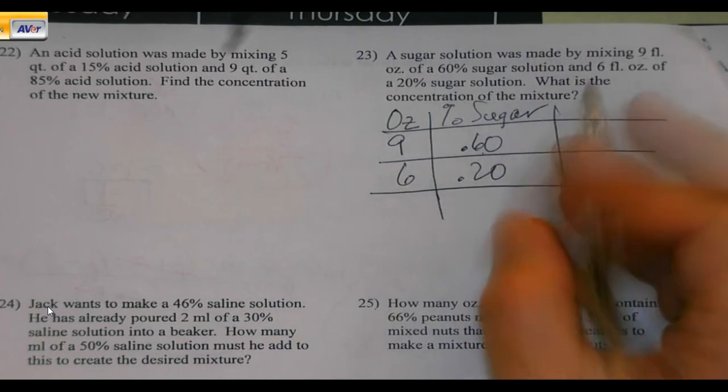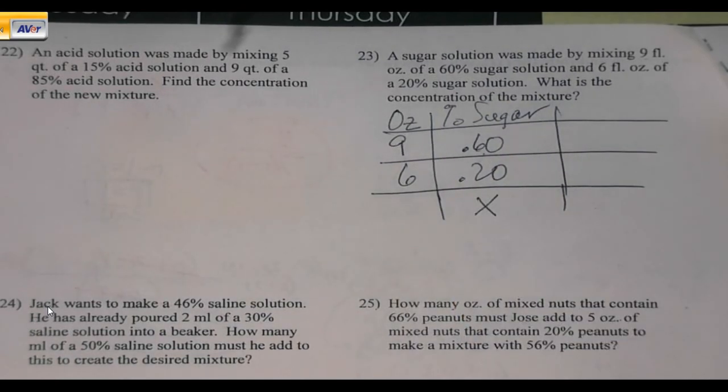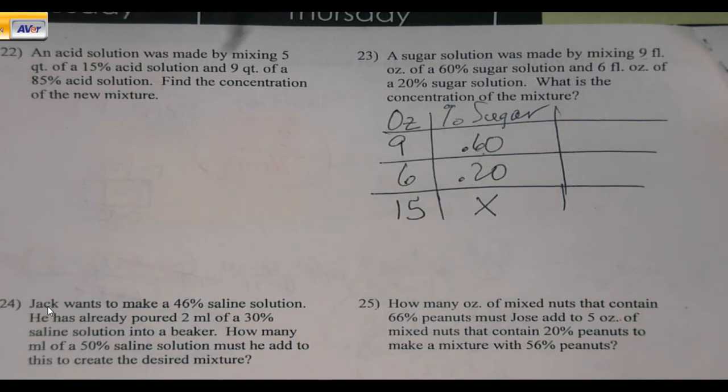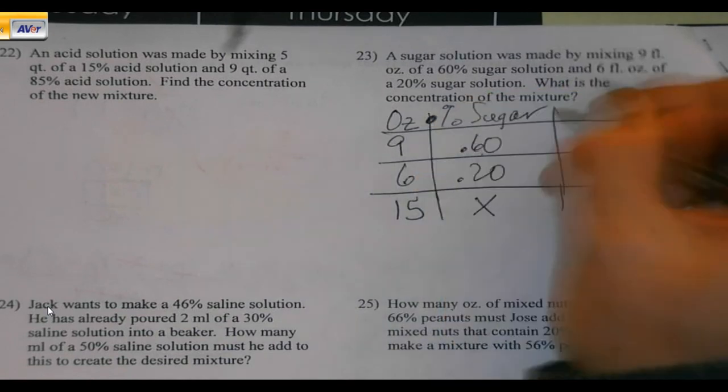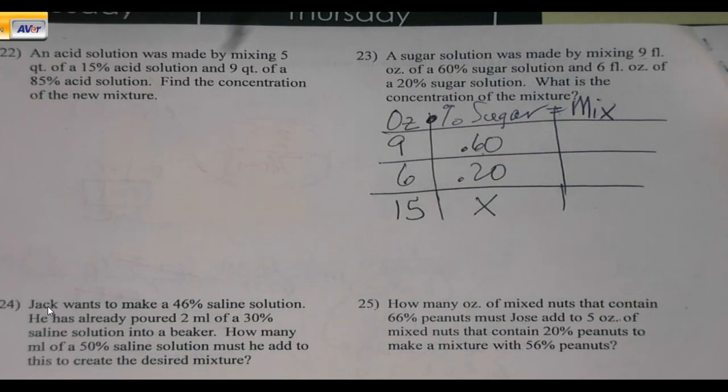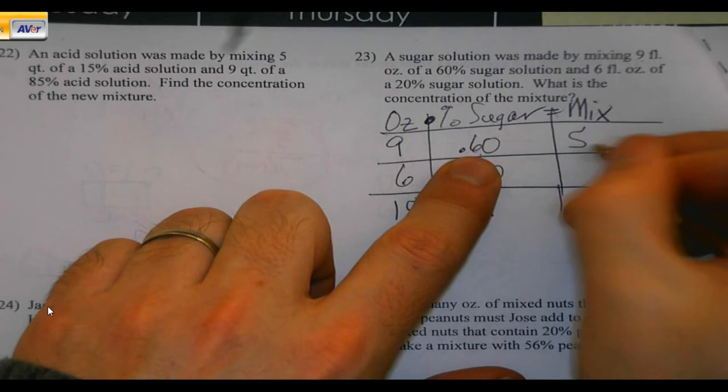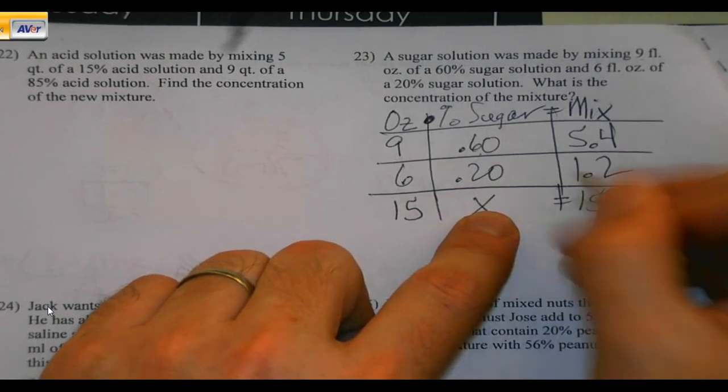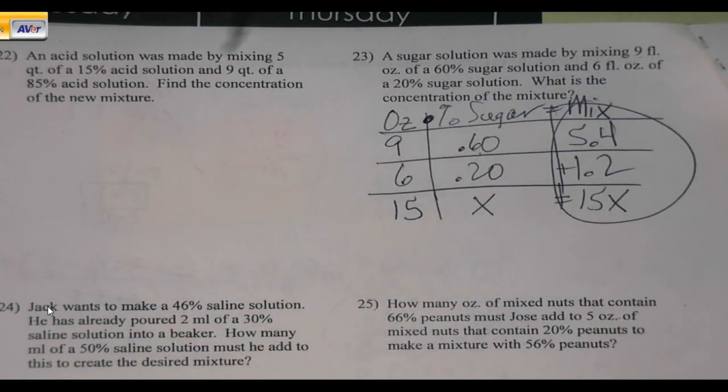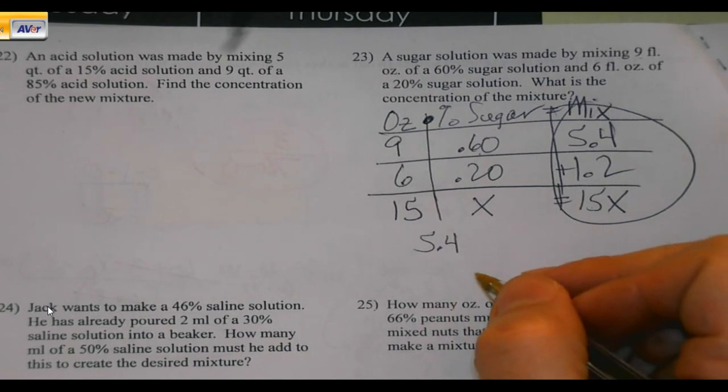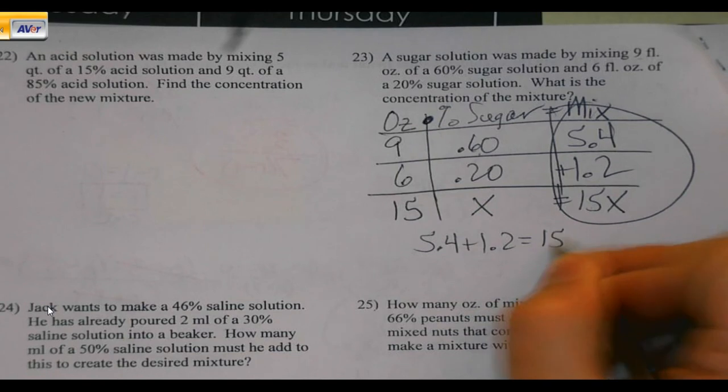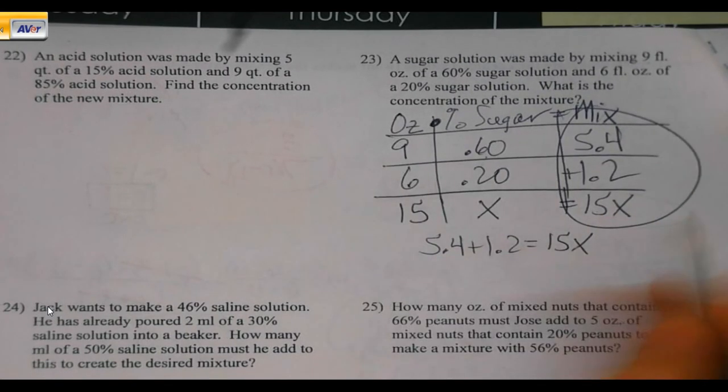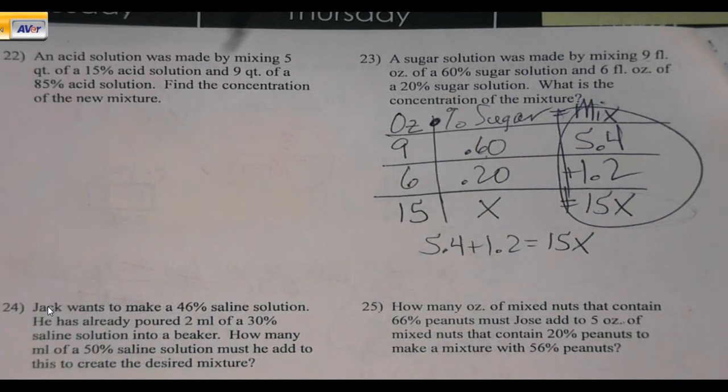And 6 fluid ounces of a 20% solution. What is the percentage of the mixture? And I also know with my mixture, 9 and 6 means I'm going to have 15 ounces at the end. So ounces times sugar percentage equals the mix that you're going to get. I multiply these values together. And that last column gets me my equation. Add by 15. And the x is the decimal, but I want the percentage. 46%.